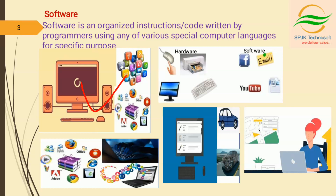Coming to the hardware and software — this diagram shows hardware devices: mouse, keyboard, printer, monitor. These are all hardware devices and they are working based on how instructions come from the software. Examples of software are FB, email, YouTube, Word, etc.